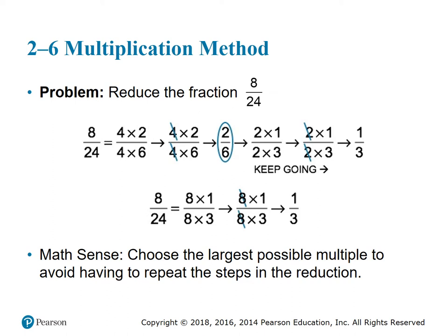To use the multiplication method, find a number that divides into both the numerator and the denominator evenly — these are called factors. Write out the multiplication for the numerator and denominator, then cross out the two identical numbers. What is left will be the reduced fraction. Tip: choose the largest possible multiple to avoid repeating the steps.